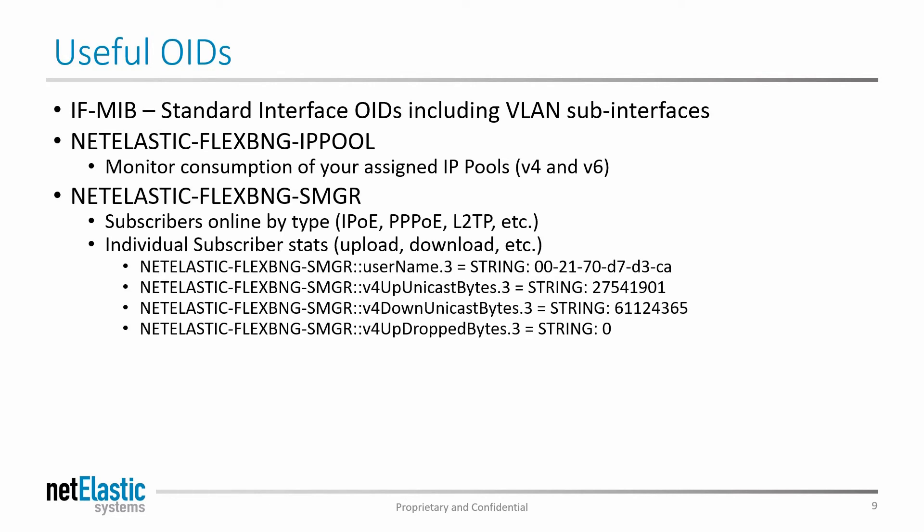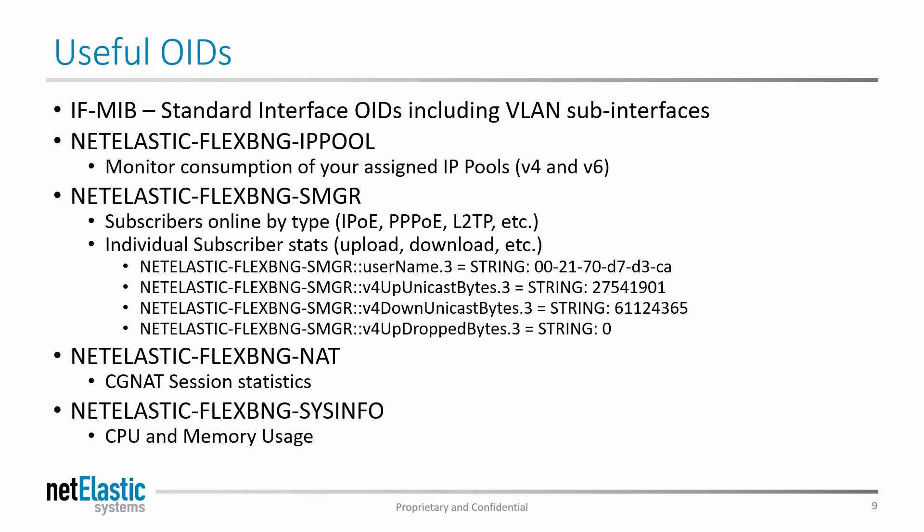Within the S-Manager — that's really the subscriber manager tree — you can pull up very detailed information, not only by looking at how many subscribers you have online by given type (IPOE, PPPOE, or total), but you can also drill down to specific individual subscriber stats and monitor long-term their upload, download, and any drop packets. This is very useful for smaller providers that don't have tens of thousands of subscribers. On the NAT tree, you can collect and monitor all of your CGNAT session statistics, both total as well as broken down by type. And then generic system info where you can monitor CPU and RAM usage of the virtual router itself.